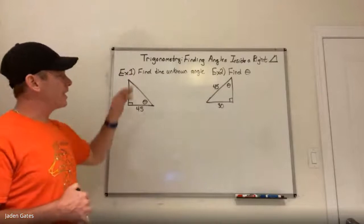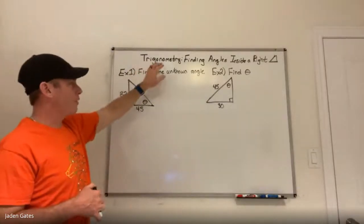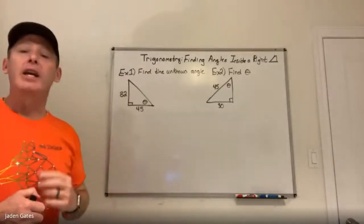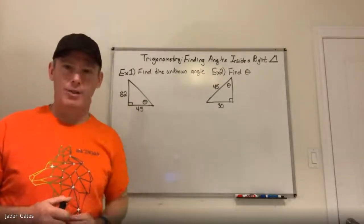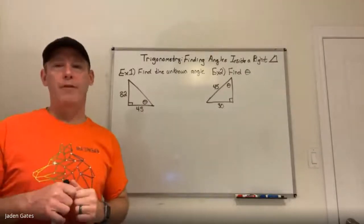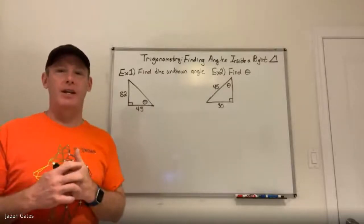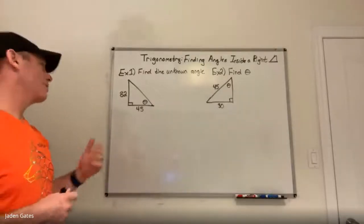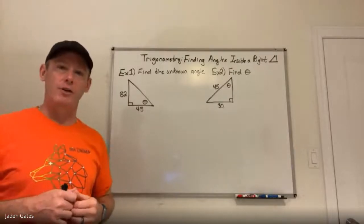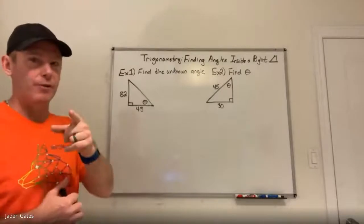This is leaving off where we were last week, finding the sides inside of a right triangle. Here we're looking at finding the angles inside of a right triangle, and if you had no problems figuring out the sides, the steps are almost the same except for the ending. If you did struggle with finding the length of the side, this is also a good review because the steps are the same except for the ending.